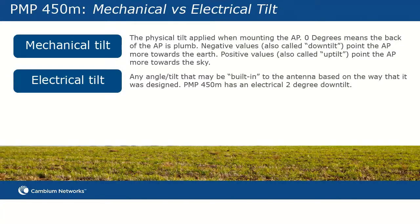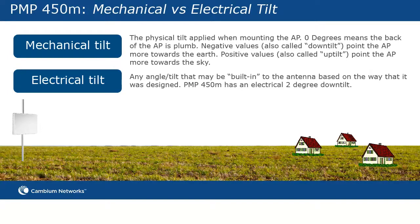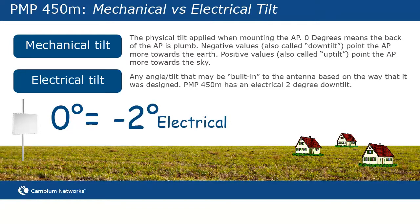In this example, if an operator lives in a relatively flat area and seeks to get max distance by attempting to shoot out over the horizon, then they would want an overall tilt of 0 degrees. Because there are 2 degrees of electrical down tilt, they would want to mount the AP with 2 degrees of up tilt. Negative 2 degrees electrical plus 2 degrees mechanical equals 0 degrees overall.